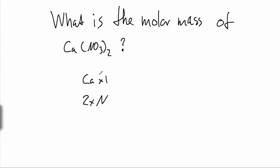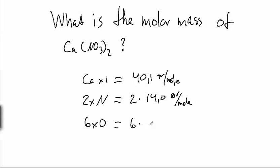Single calcium has the molar mass of 40.1 grams per mole. Two nitrogen have the molar mass of 2 times 14.0 grams per mole, and the oxygen means that I have 6 times 16.0 grams per mole.